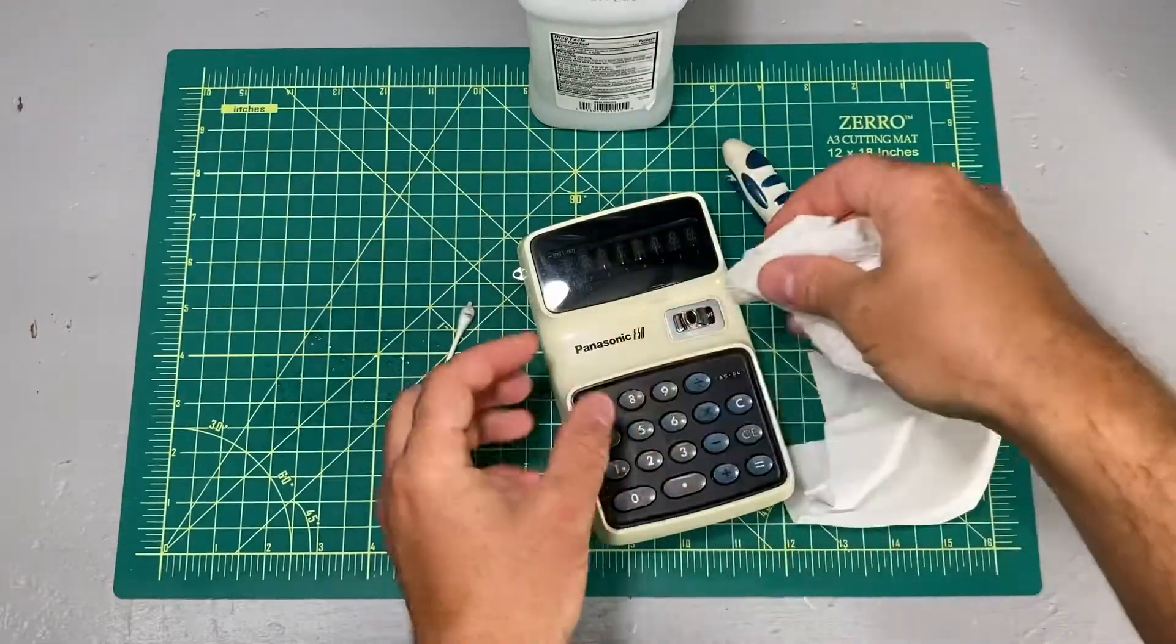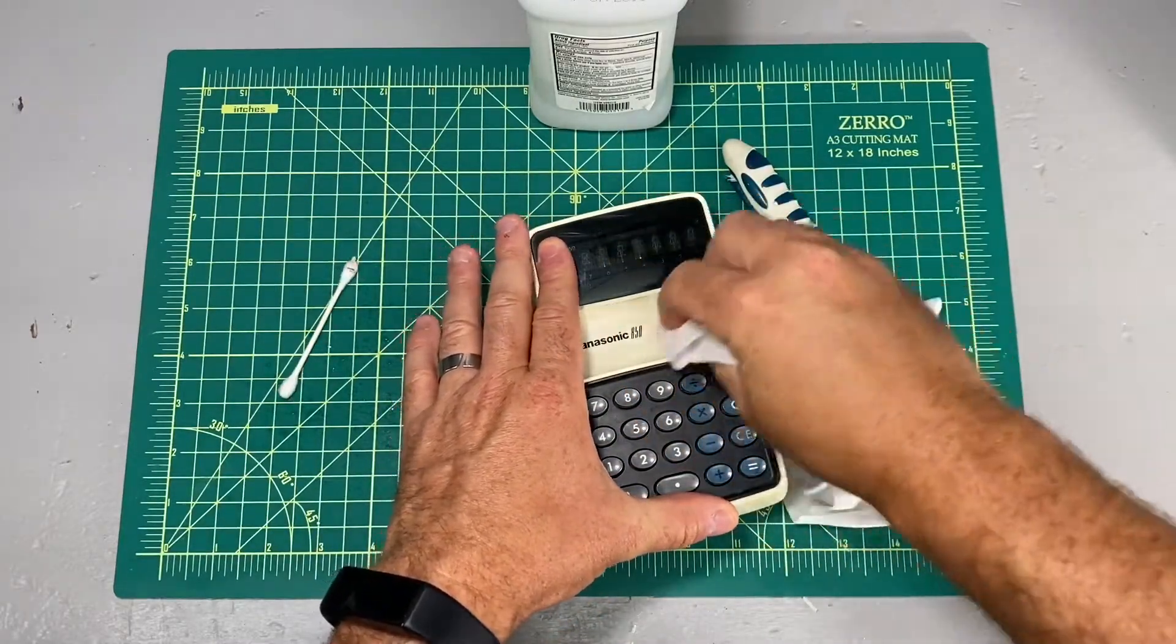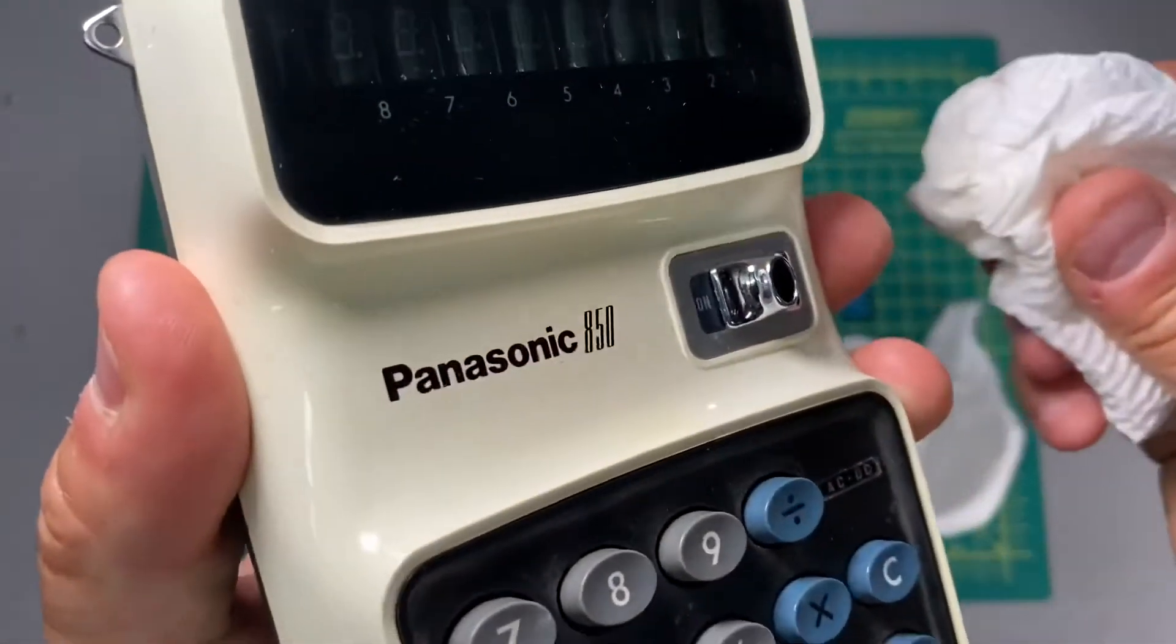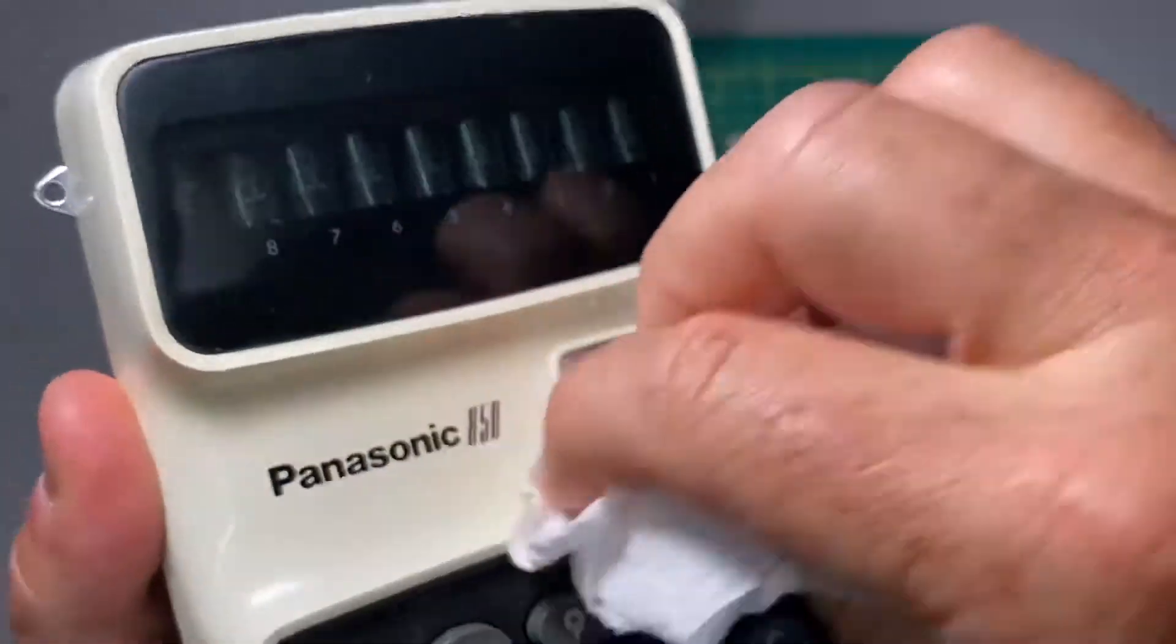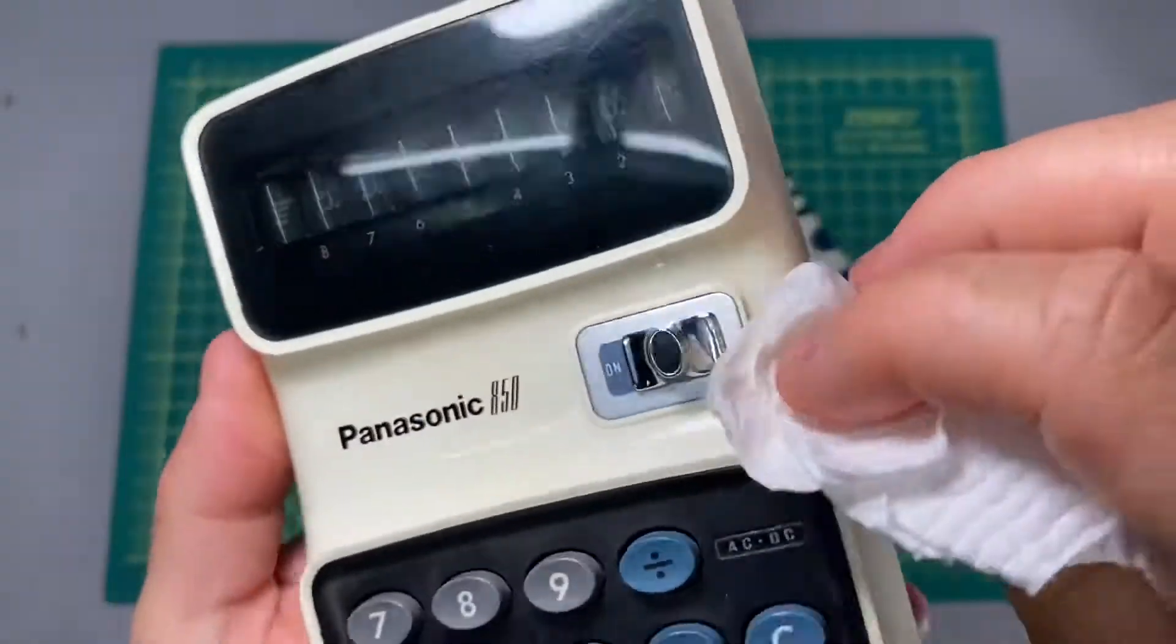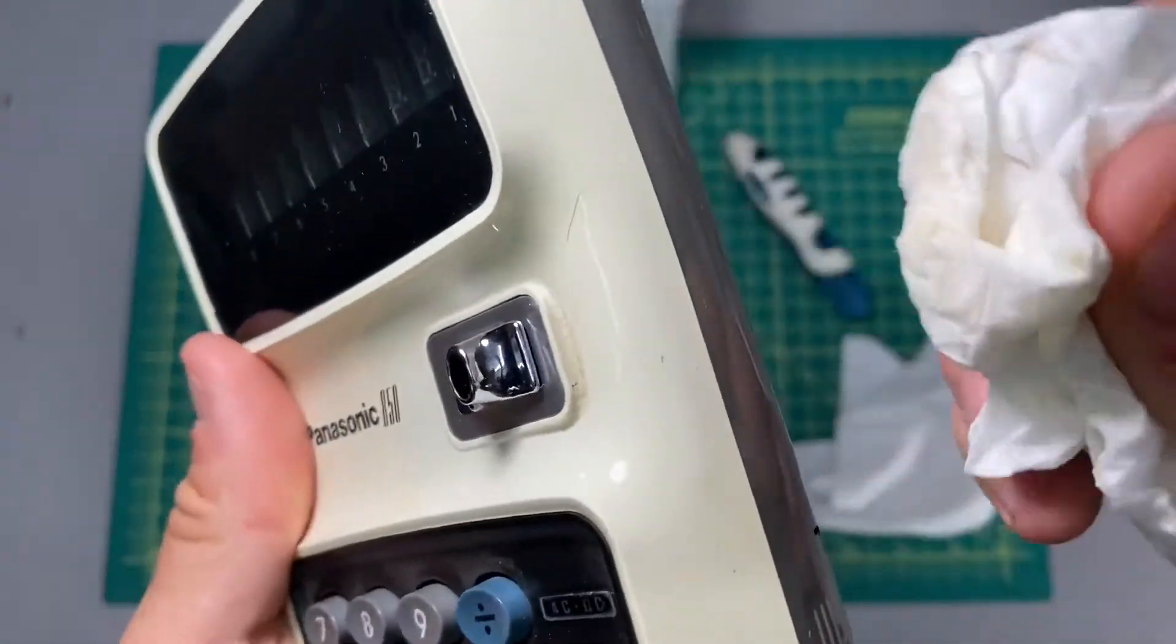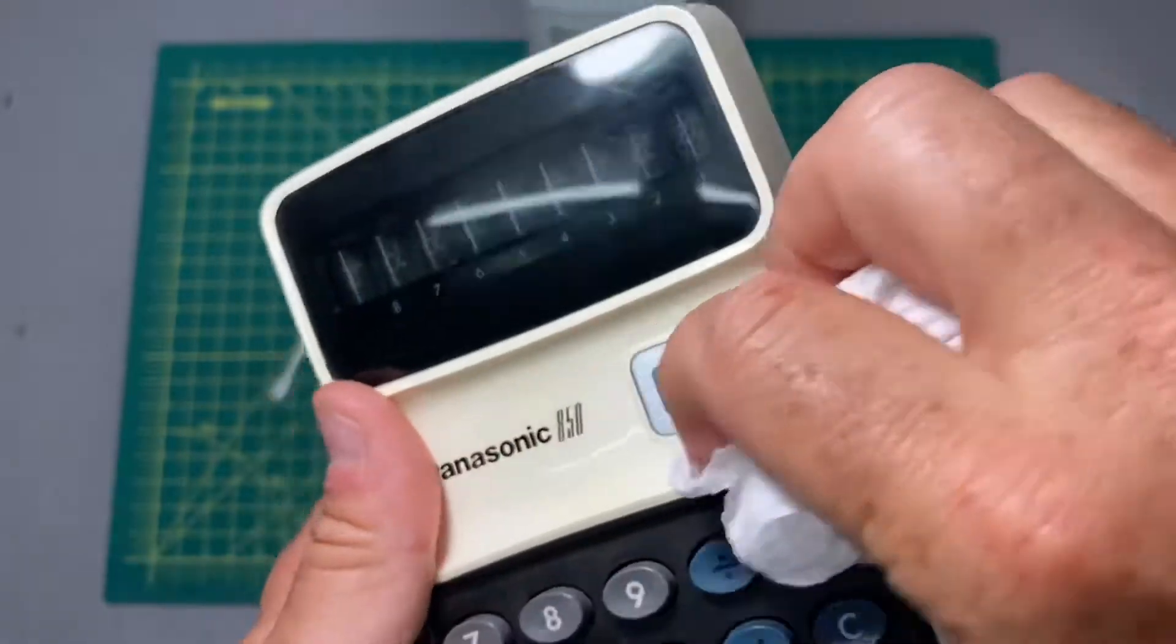A lot of times with paper towels, I'll just bunch them up and force them into little cracks and crevices, and sometimes that's enough to get the gunk out, which is definitely the case. So you can see some of the gunk there. Just press the paper towel into that space. Pretty good amount of gunk on that side. Yep, that's coming off real easy. That's great.